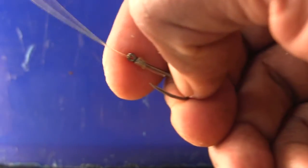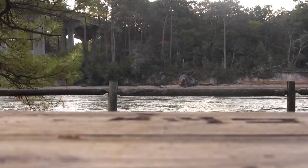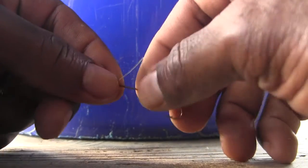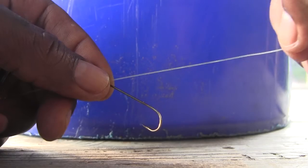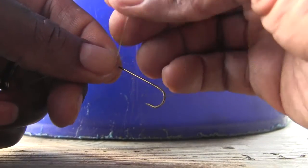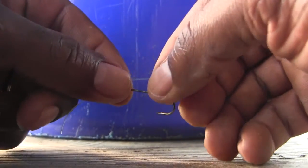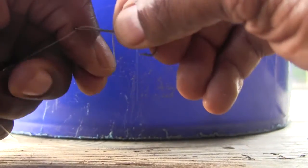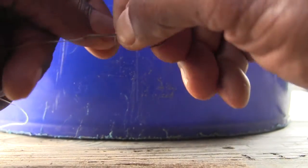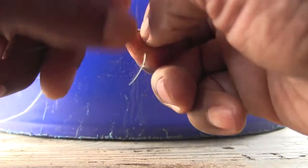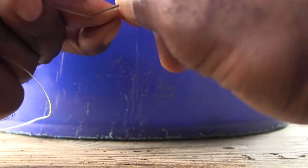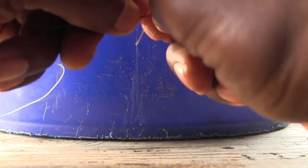I'm going to do that again for you. So here we go. Through the eye. Pull it down. Make our loop. Just like that. I'm taking this tag end here and we're wrapping. One. Two. Three. Four. Five. So we have that wrapped.